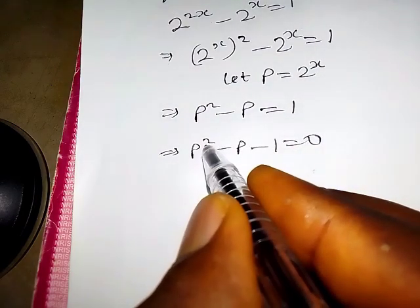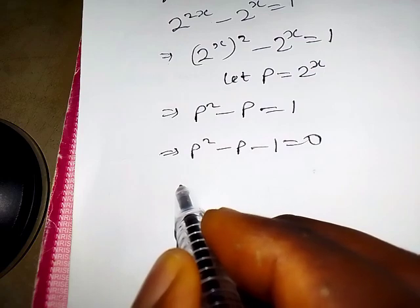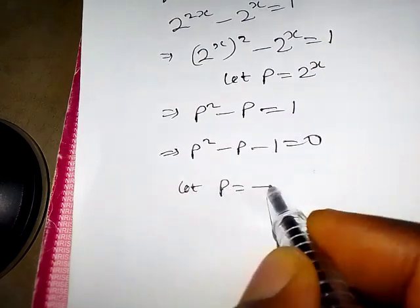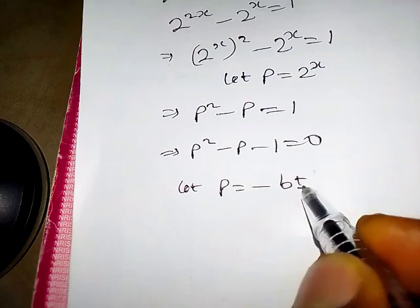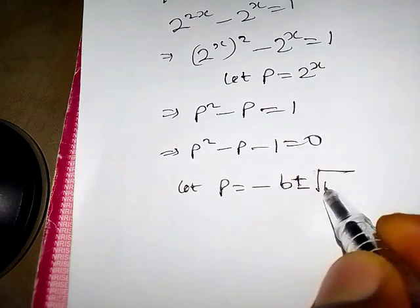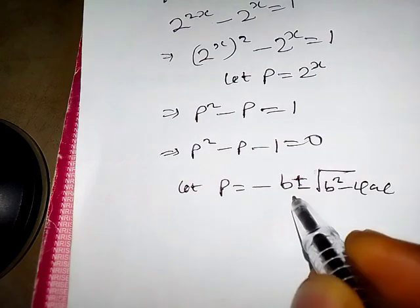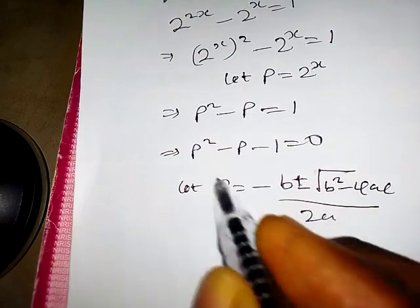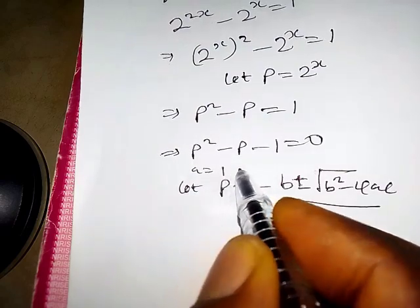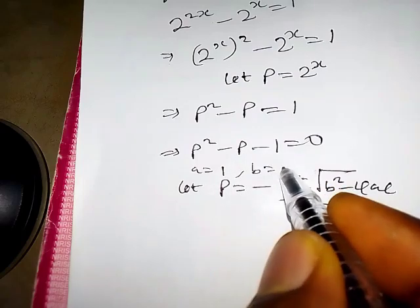It cannot be easily factorized, so we are going to apply the quadratic formula: p equals negative b plus or minus square root of b squared minus 4ac, all over 2a. Here, a equals the coefficient of p squared, which is 1, and b equals the coefficient of p, which is minus 1.